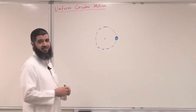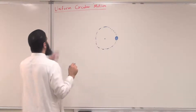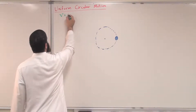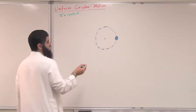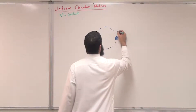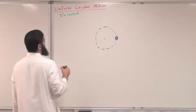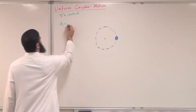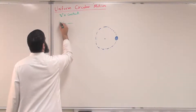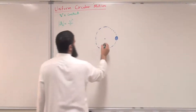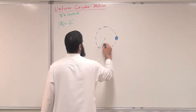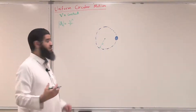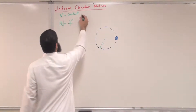We have seen this before from a kinematics point of view. We said that an object moving with constant speed — V is constant, which is the speed — but the direction is changing. V is always tangent to the circular path, so it keeps changing its direction. We said that there is a centripetal acceleration, which is acceleration toward the center, and its magnitude is V² over R, where R is the radius of the circular path.